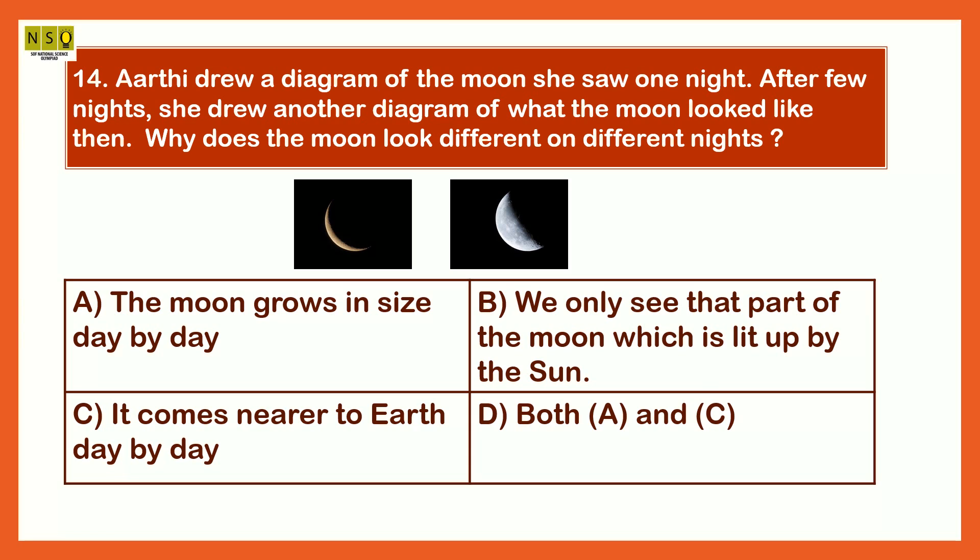The answer is we only see that part of the moon which is lit up by the sun. The moon does not grow in size, its size remains the same, but only we can see that part of the moon which is lit up by the sun.